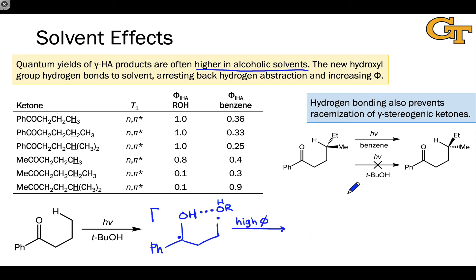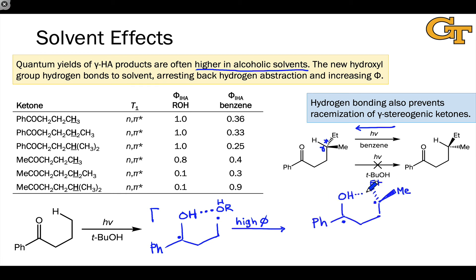Further evidence for hydrogen bonding comes from reactions of gamma-stereogenic ketones, where the gamma carbon is a stereocenter. When irradiated in benzene, racemization at the gamma carbon is observed because a planar carbon-centered radical forms and can receive the hydrogen back on either face, yielding a racemic mixture of enantiomers. This racemization is not observed in t-butanol, because hydrogen bonding dramatically slows bond rotation and prevents racemization — any back hydrogen transfer occurs with retention of configuration.